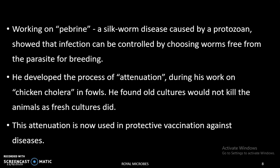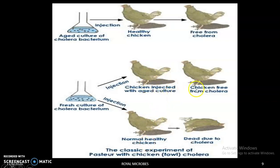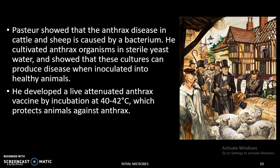Using attenuation, he developed the chicken cholera vaccine. In his experiment, he took an aged culture and injected it into healthy chickens and found they were free from cholera. Then fresh culture was injected into two groups: chickens previously injected with aged culture and normal healthy chickens. The chickens injected with aged culture were free from cholera, while the normal healthy chickens developed cholera and died.